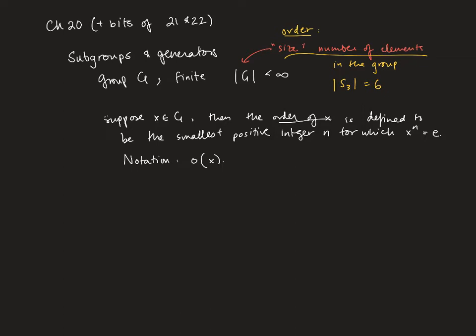So let's look at our example S3. So that's our finite group. And let's take X to be the three cycle (1,2,3). Now I'm trying to find the order of X.